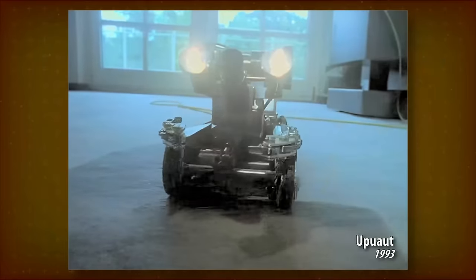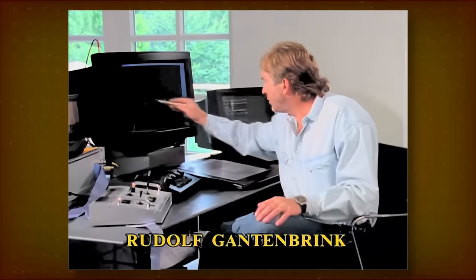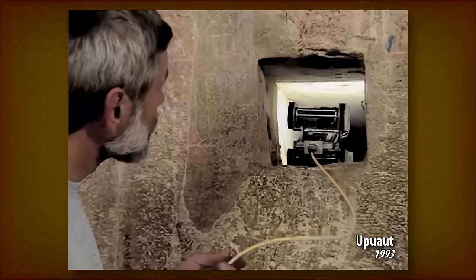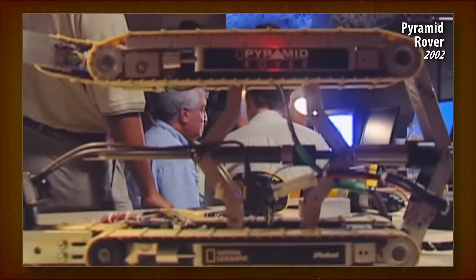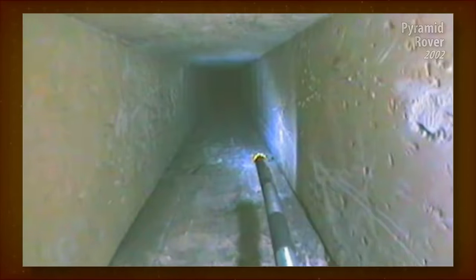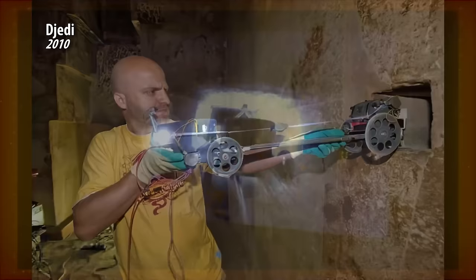In modern times, the shafts were explored by robots three times. In 1993, by Rudolf Gantenbrink's Upuaut Robot, which discovered the blocking stones. In 2002, by iRobot's Pyramid Rover, which drilled a hole in the terminating stone. And in 2010, by the Djedi Robot, which peeked into a small space behind the blocking stone.